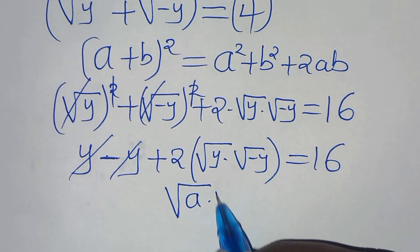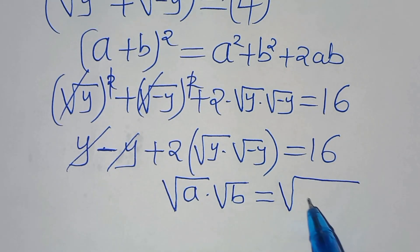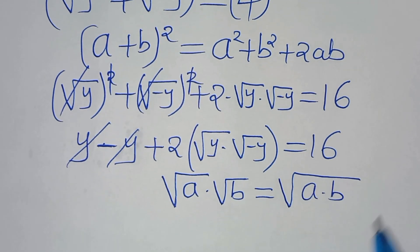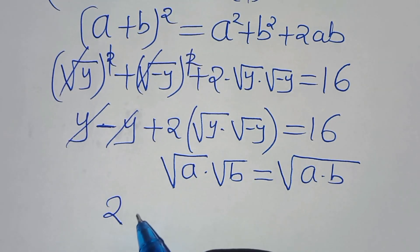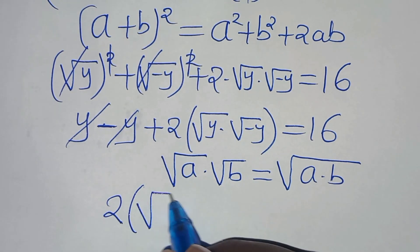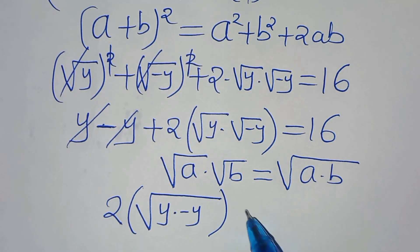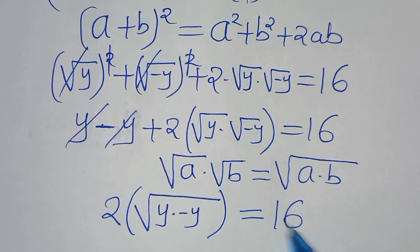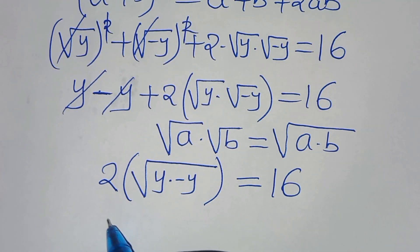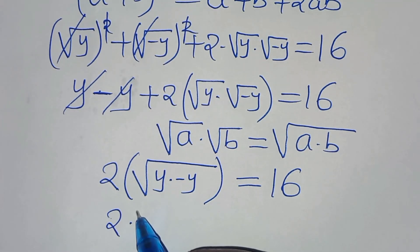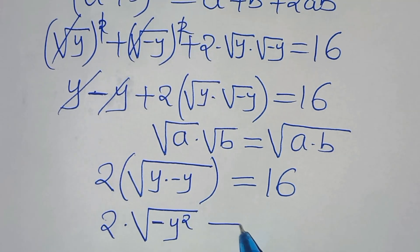The expression square root of y times square root of minus y is in the form of square root of a times square root of b, which can be expressed as square root of (a times b). So we have 2 multiplied by the square root of y times minus y, which is square root of minus y squared, equals 16.